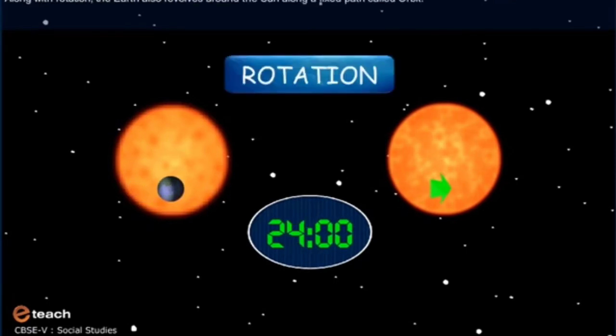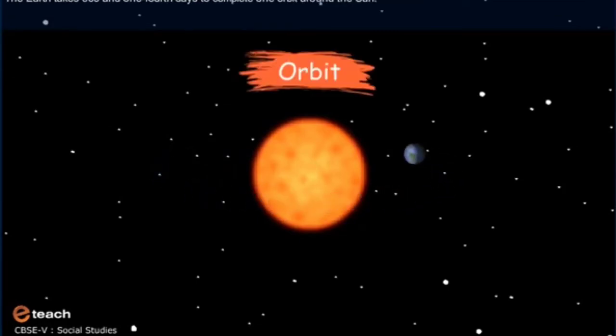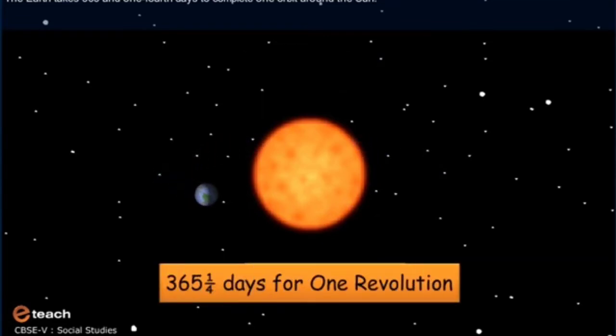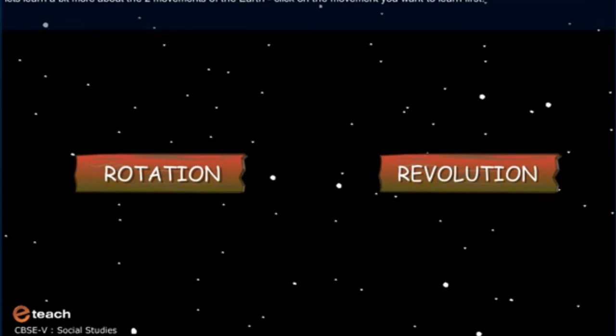Along with rotation, the earth also revolves around the sun along a fixed path called orbit. The earth takes 365 and one-fourth days to complete one orbit around the sun. This movement by the earth around the sun is called revolution. Let's learn a bit more about the two movements of the earth.